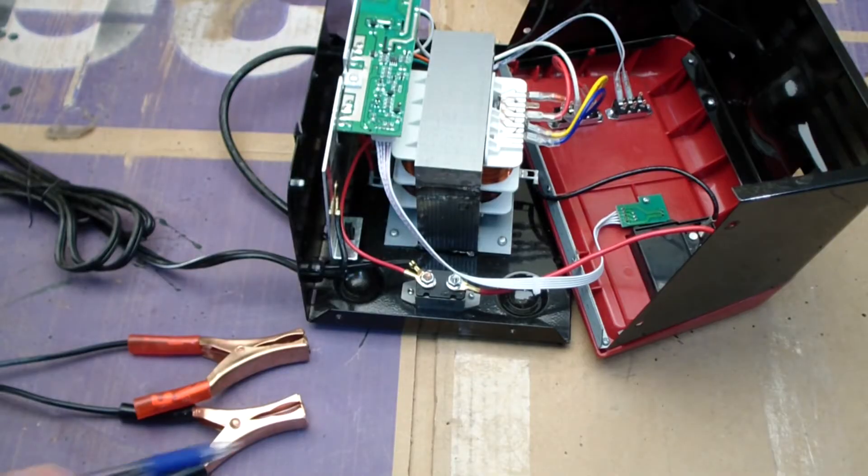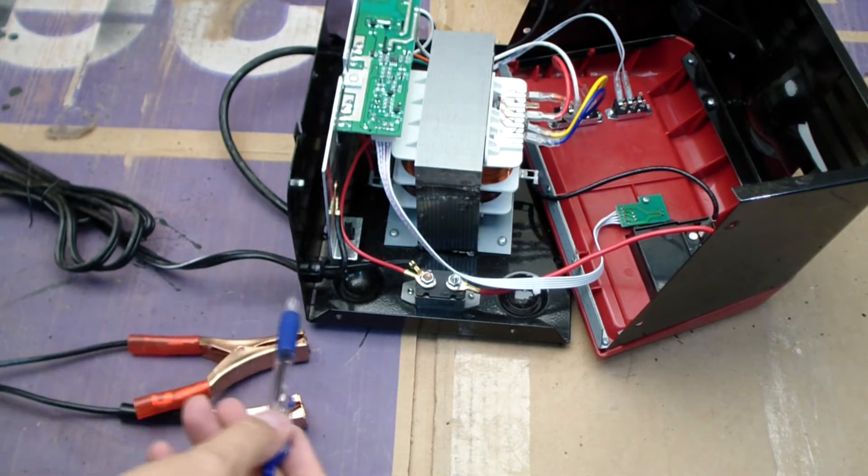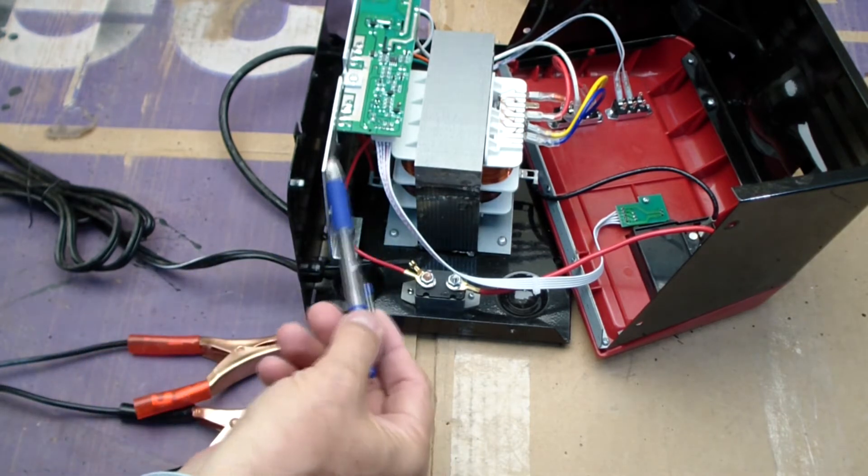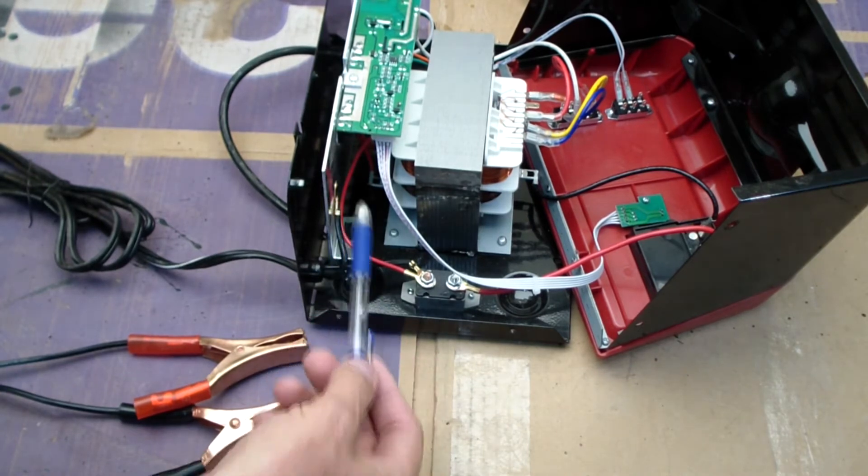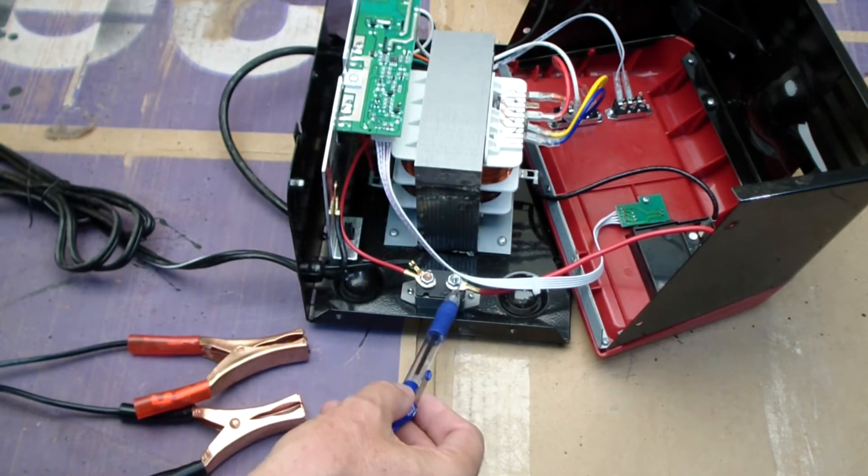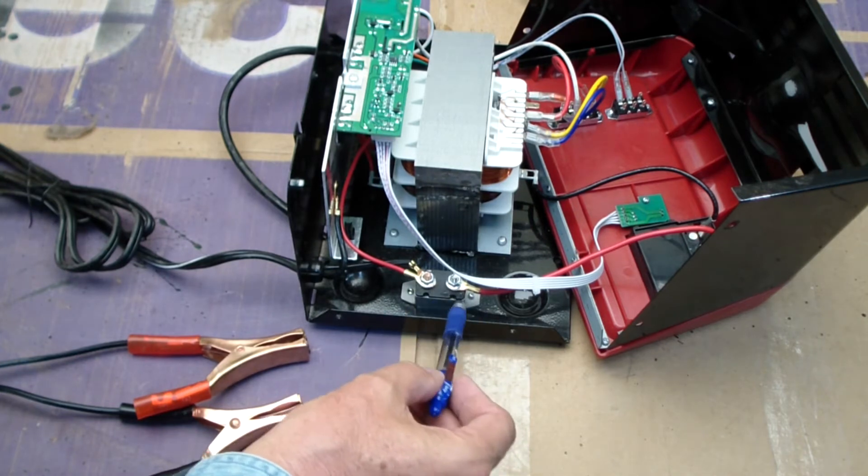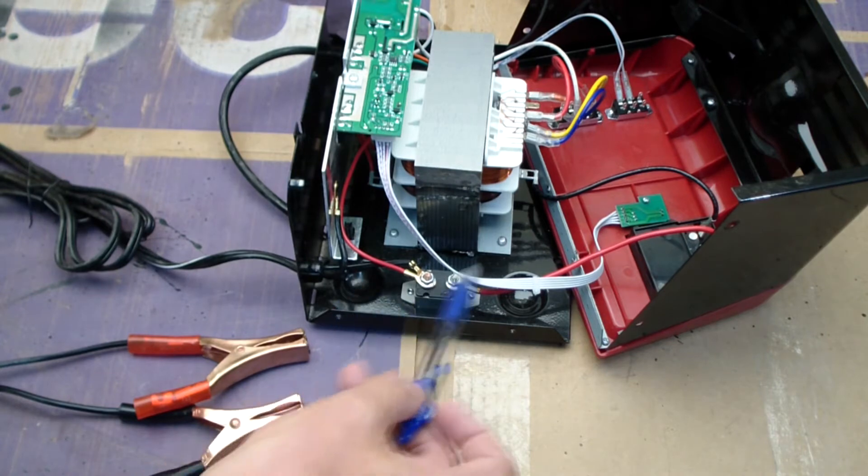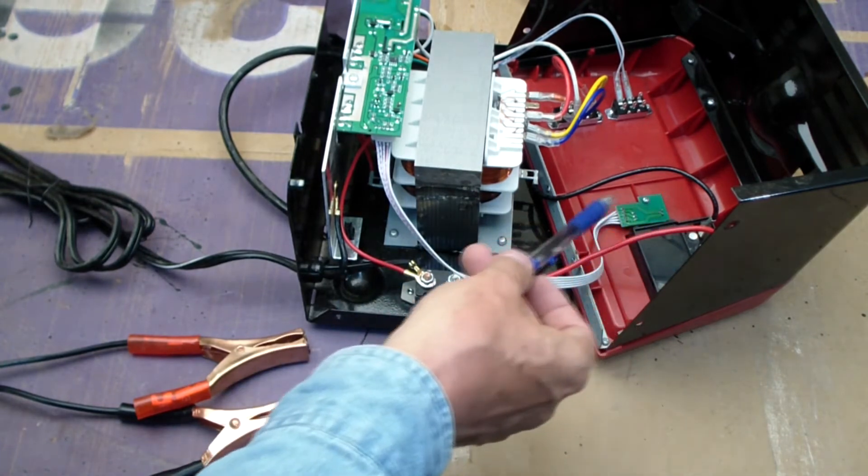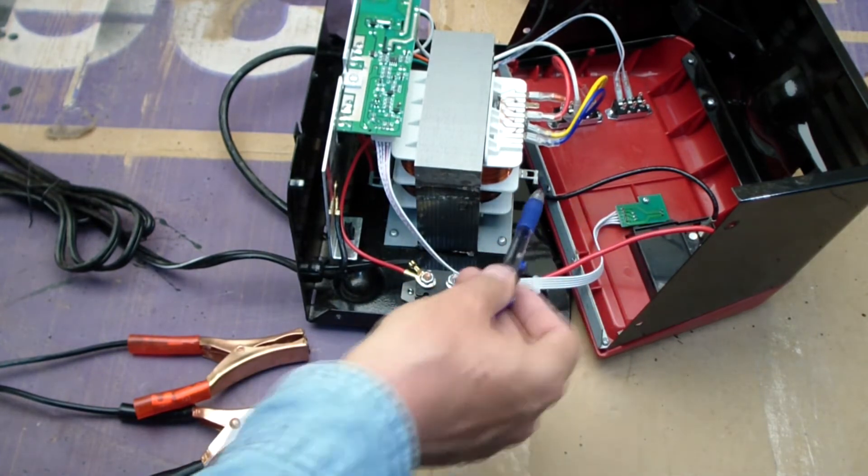We can see our power lead cables come in right here. And the black cable is hooked up to this metal heat sink here for the negative. And the positive comes through this way. We can see it goes through a self-resetting relay, which I'll talk about more in just a minute. And then it goes over to the meter, and then it comes back to the transformer.